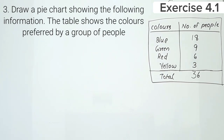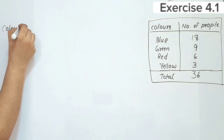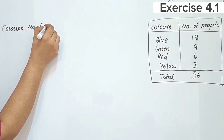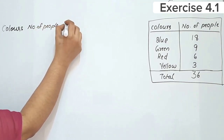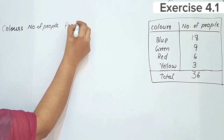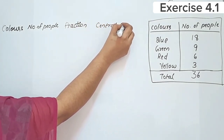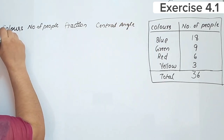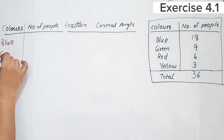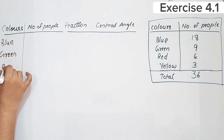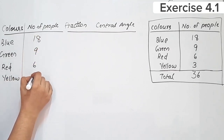The table has the following columns: the 1st column is Colors, the 2nd column is Number of People — with values 18, 9, 6, and 3 — the 3rd column is Proportion, and the 4th column is the central angle.